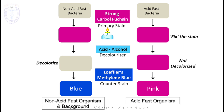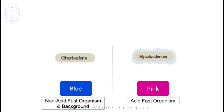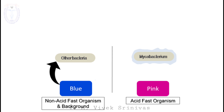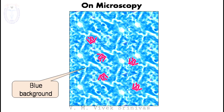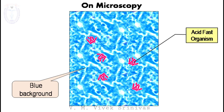So, on acid fast staining, the non acid fast bacteria and the background appear blue, and the acid fast bacteria appear pink. This color difference is due to the difference in their cell wall constituents. The surface of the acid fast bacteria consists of a lipoidal wall called mycolic acid, which is a waxy material over the mycobacterial surface. But this waxy material is not present over the non acid fast bacteria. So, on microscopic examination, the background appears blue and the acid fast bacteria stain pink.